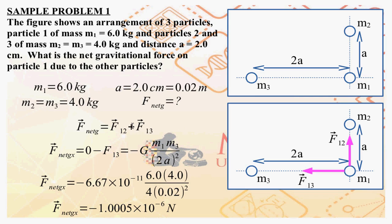For the x-component of F_net_g: F12 is vertical, so it has no x-component. F13 is horizontal, heading in the negative direction, so all of it is in the x-component and in the negative direction. Therefore F_net_g_x is equal to negative F13. F13 is the gravitational force, so it equals G times m1 times m3 over (2a) squared, where 2a is the distance between m1 and m3.